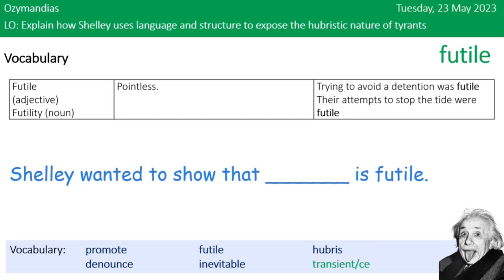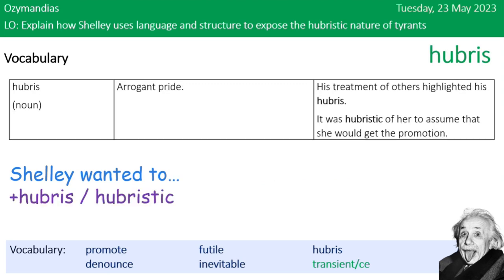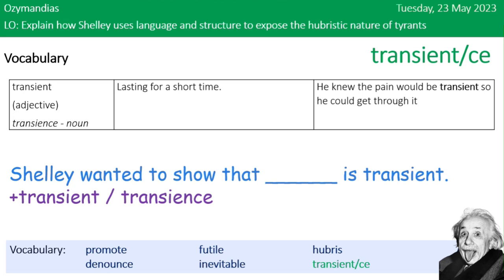The first word to write down is futile, which means pointless. Shelley wanted to show that human power is futile. Next word: hubris, which means arrogant pride. Shelley wanted to show that hubris was futile. Next word: transient, meaning lasting for a short time. Shelley wanted to show that human power is transient.